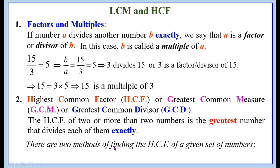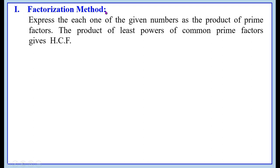There are two methods of finding the highest common factor of a given set of numbers. The first method is the factorization method. We have to express each one of the given numbers as a product of prime factors. The product of least powers of common prime factors gives the highest common factor.